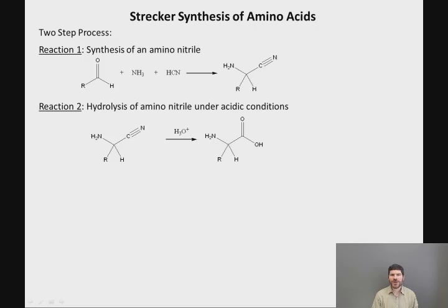The Strecker synthesis is a two-step process. So in the first reaction, you react an aldehyde with ammonia and HCN, put those things together, and they undergo a three-component reaction to give an amino nitrile, where you have a carbon that contains both an NH2 and a CN group.